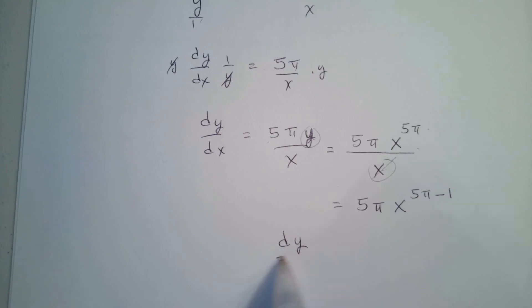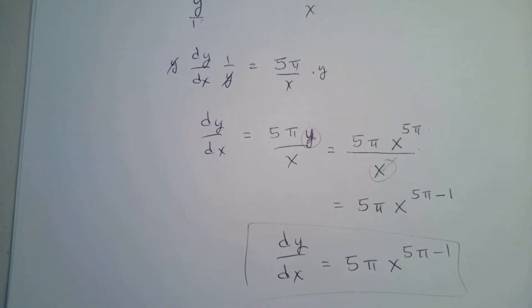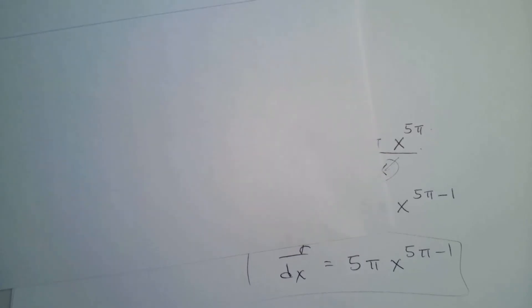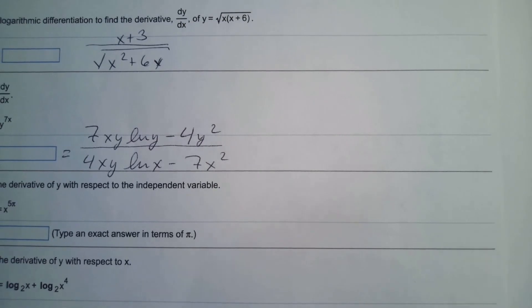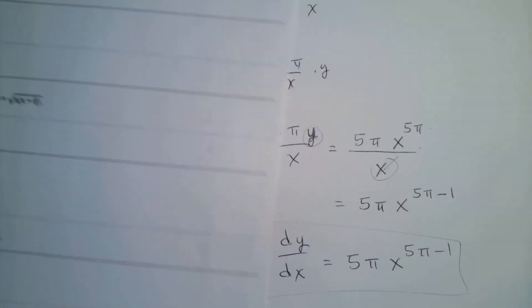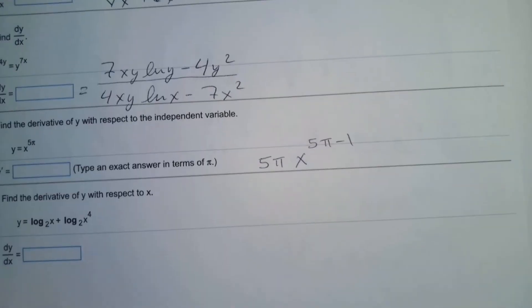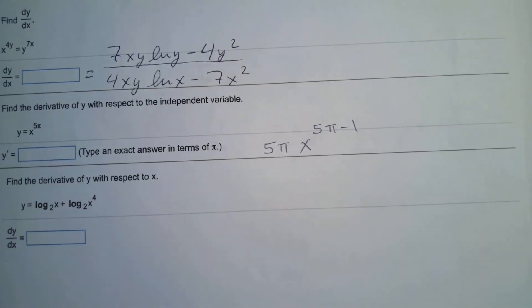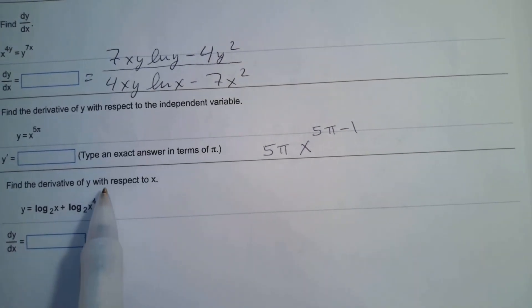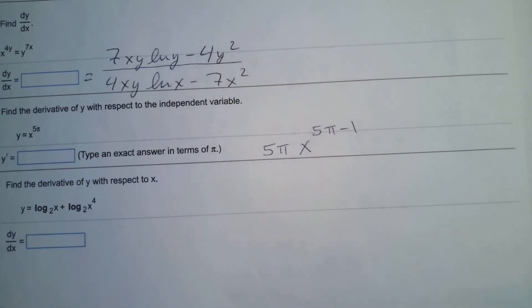So that's my derivative: 5π x to the 5π minus 1. Type it x to x in terms of π. Yeah, so it has to have π in there.